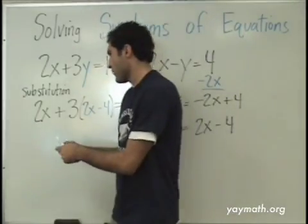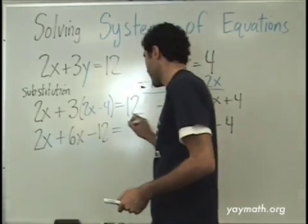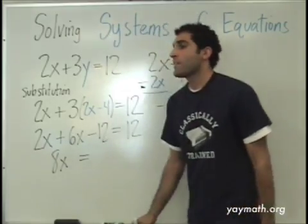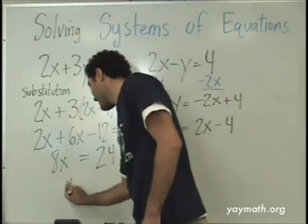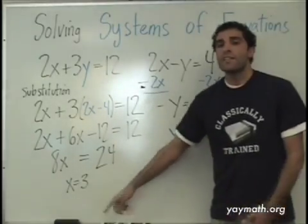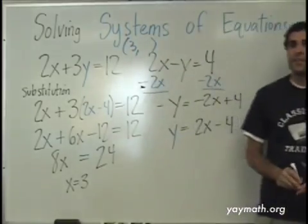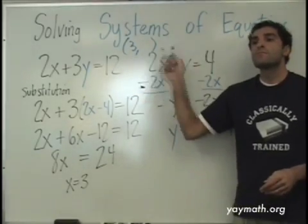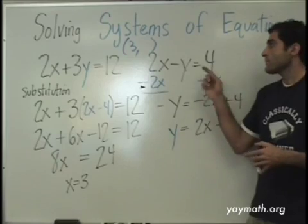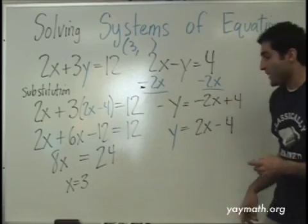Algebra — walk me through. Two x plus six x minus four equals twelve. So eight x minus four equals twelve, giving twenty-four — and x equals three. When you plug in x equals three, three is half the solution. The solution is three-something. Plug it into which one? Either one — it should work for both. This one has y isolated, so we plug x right in here.